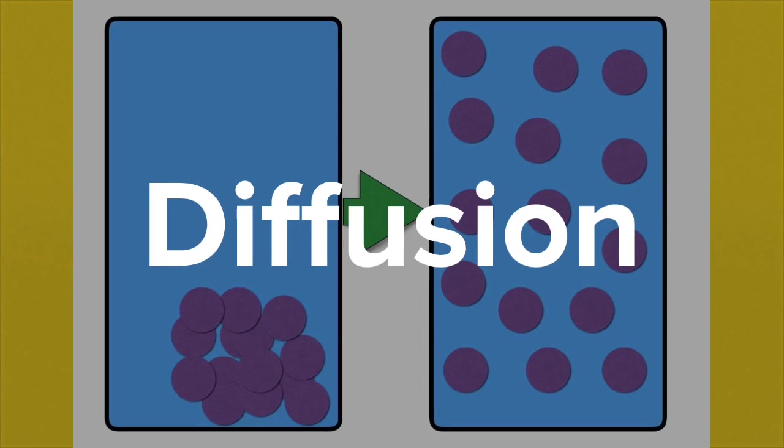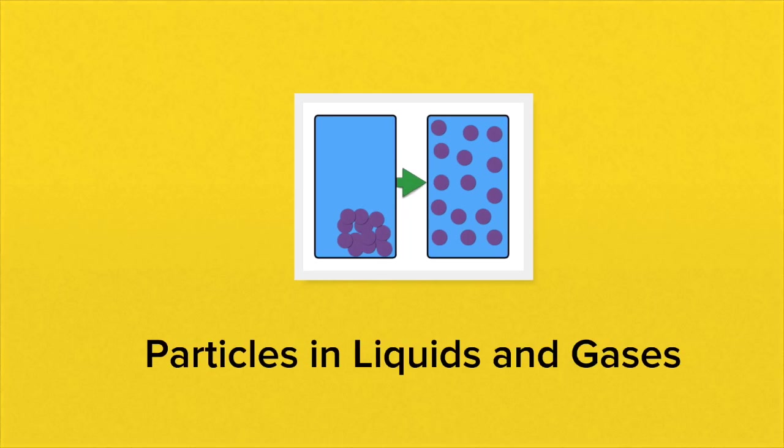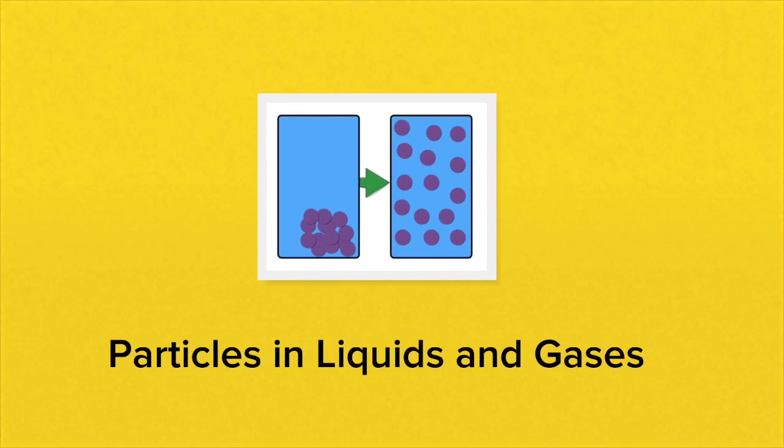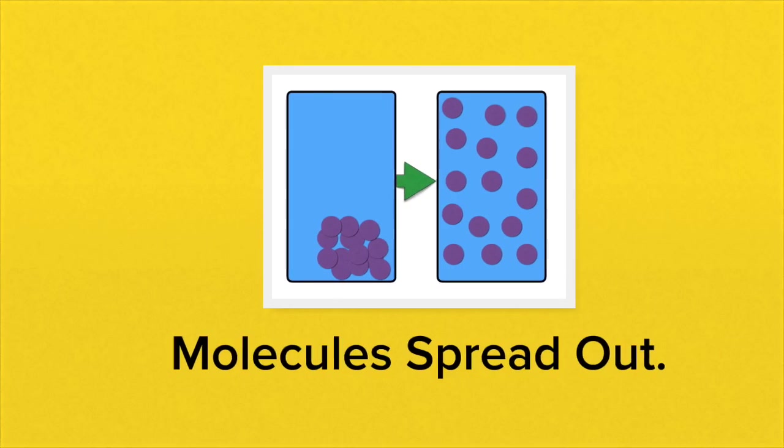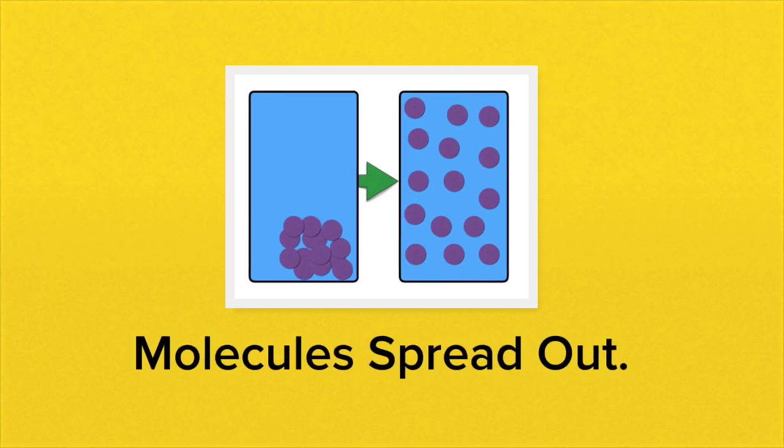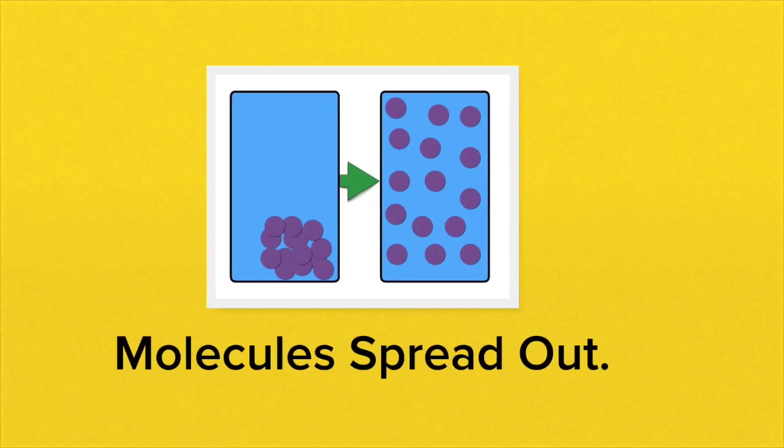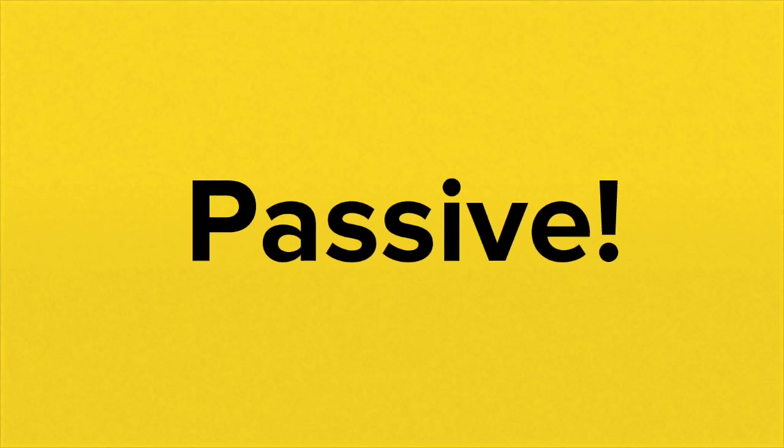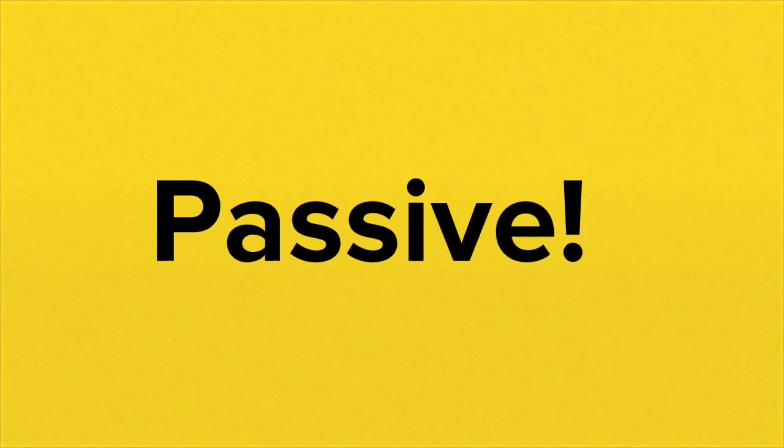Another type of passive transport is diffusion. Diffusion is the movement of particles, usually molecules, in liquids and gases. The molecules will spread out, moving from where they are in high concentration to where they are in low concentration. The movement of the molecules is passive, it requires no input of ATP.